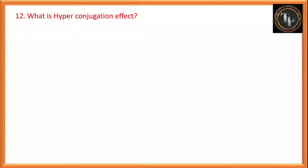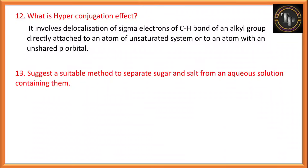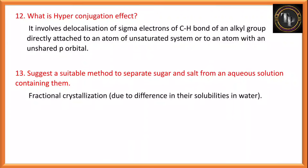Question number 12: What is the hyperconjugation effect? Delocalization of sigma electrons of C-H bonds of an alkyl group directly attached to an atom of the unsaturated system or to an atom with an unshared orbital is called the hyperconjugation effect. Suggest a suitable method to separate sugar and salt from an aqueous solution: fractional crystallization is the better method because their solubilities are different in water.